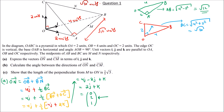Next, how do we find vector CM? We travel from C to M via: CO + OA + AM. So vector CM = CO + OA + AM.